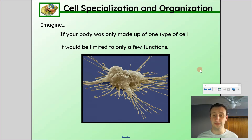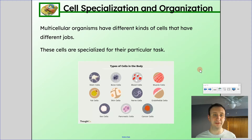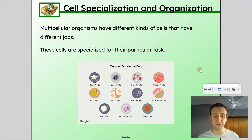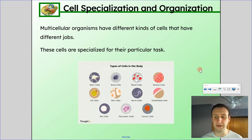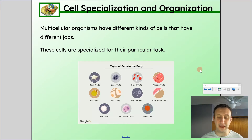Cells have special shapes and types of organelles that help them suit the function they're supposed to do. Multicellular organisms have different kinds of cells that have different jobs — these cells are specialized for their particular task. For example, here are some types of cells: stem cells (like in bone marrow), bone cells, blood cells, muscle cells, fat cells, skin cells, nerve cells, endothelial cells, sex cells, pancreatic cells, cancer cells. These are all different types of cells specialized for their particular task.